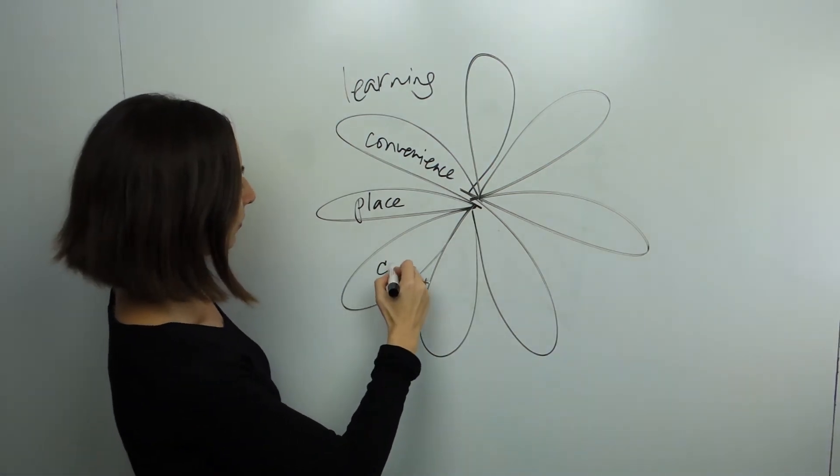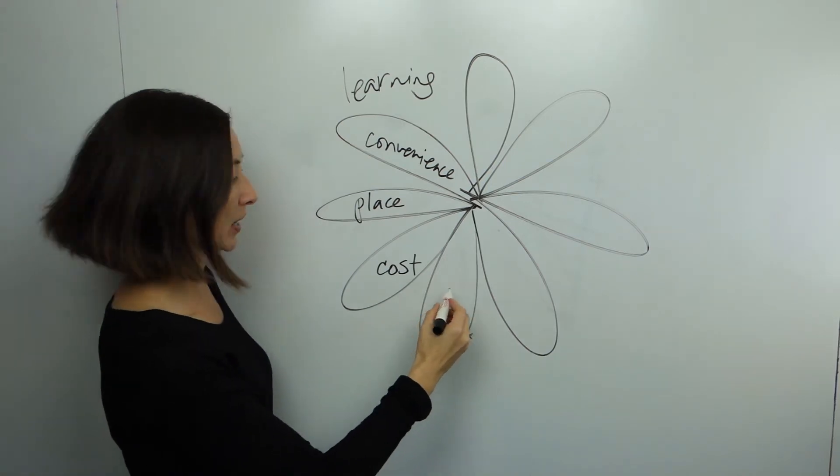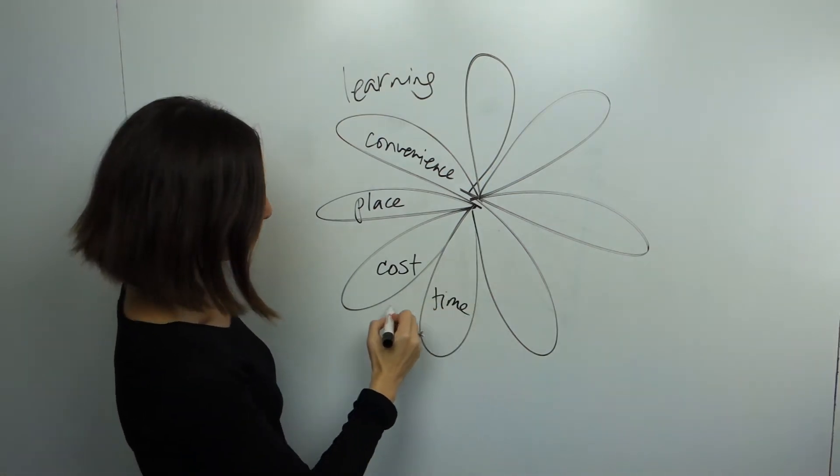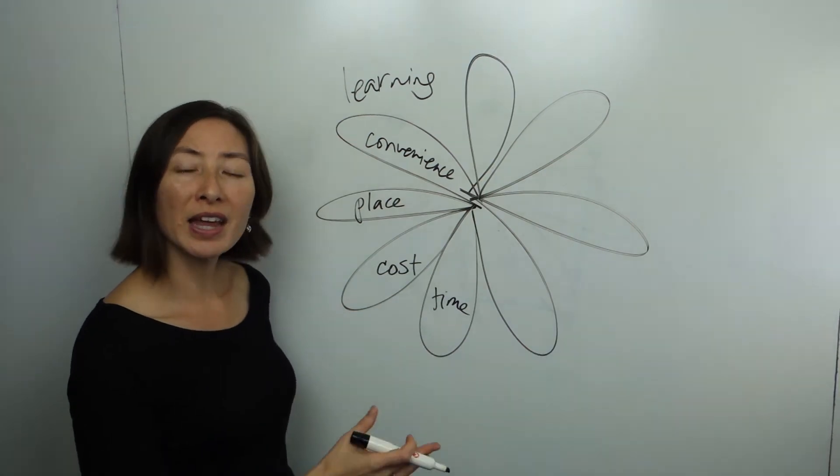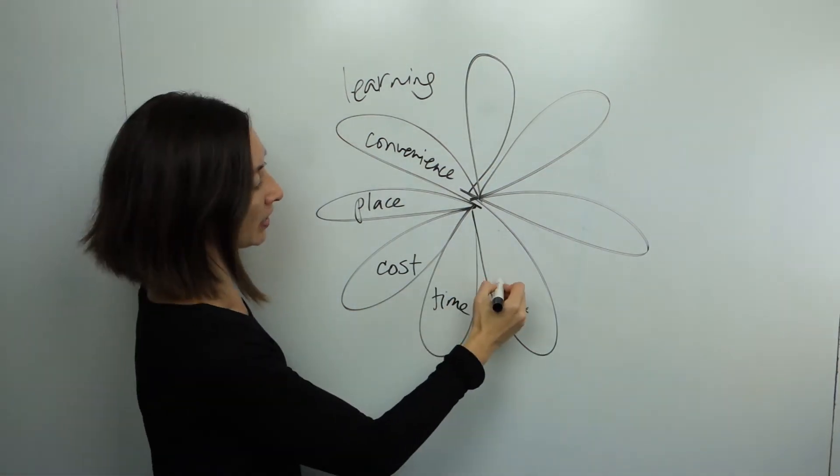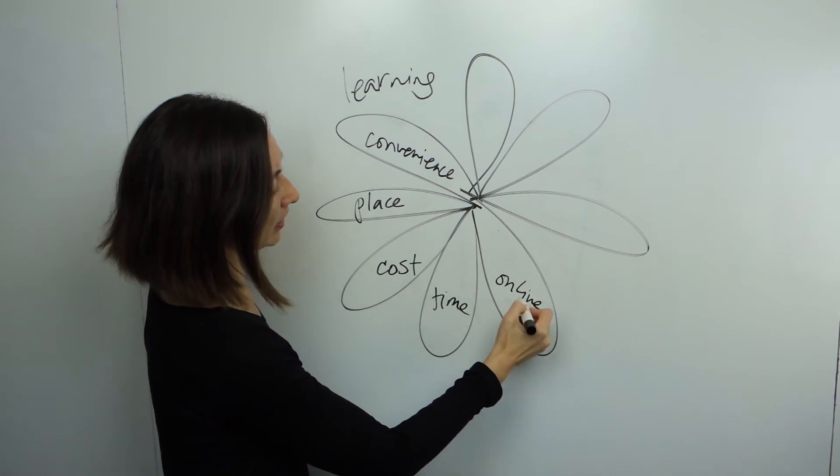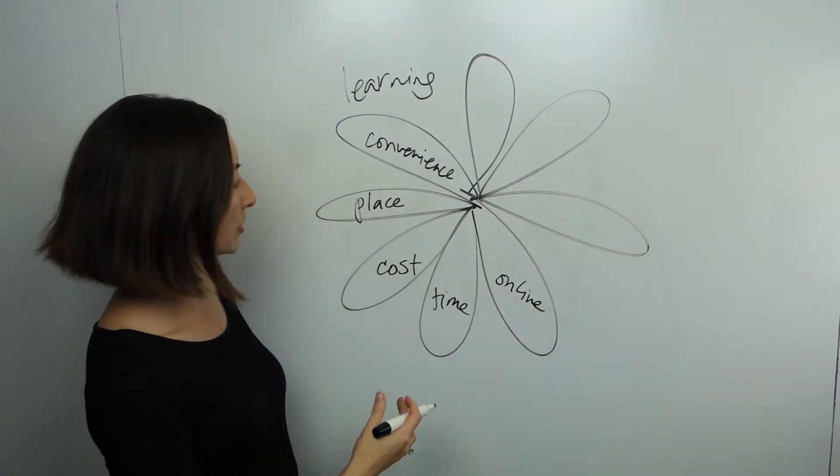Someone else may say, oh well cost is critical because you want to have value for your money and a return on investment. Someone says time and that gets people to realize, well what about taking classes that are online? Because that allows you to time shift and change schedules.